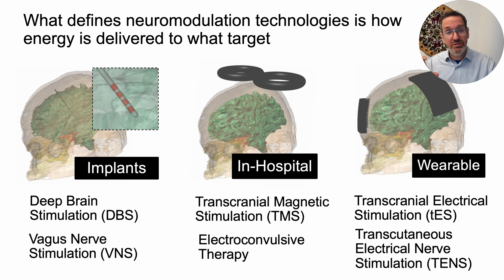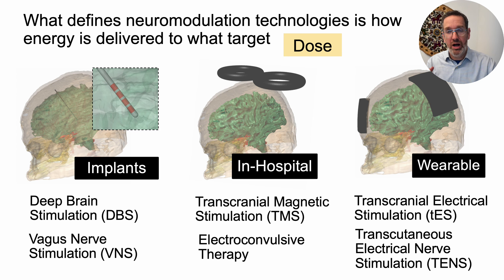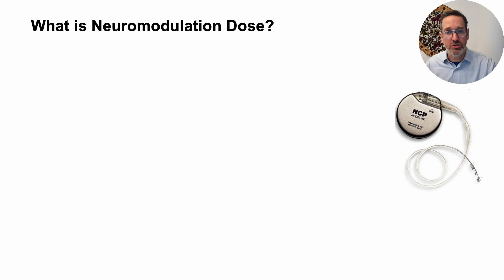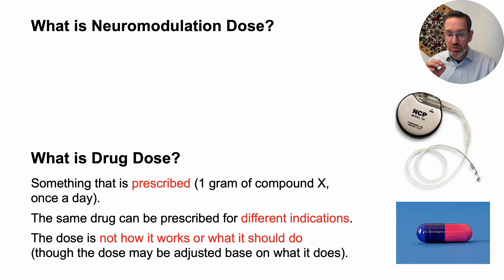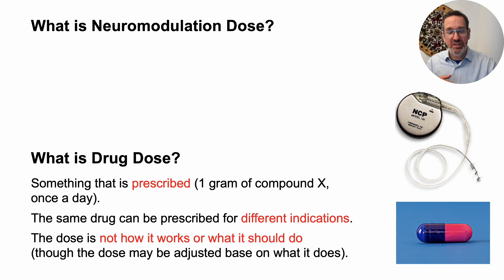When I talk about how to invent neuromodulation devices, what I'm going to say is actually universal for all of them. It gets very much to this notion of dose and how dose drives the outcomes of neuromodulation. To frame neuromodulation dose, let's first consider what drug dose is. When we take a drug, it is a prescribed dose — something like one gram of a molecule taken one time per day for four days.